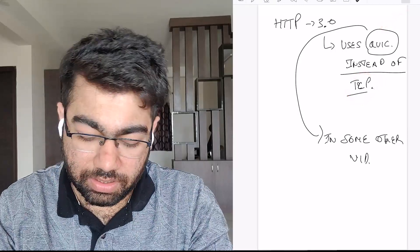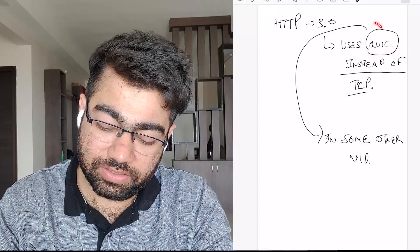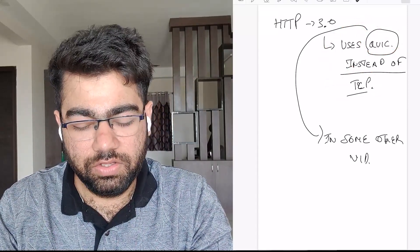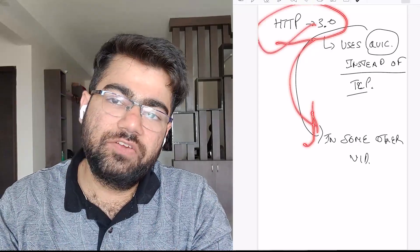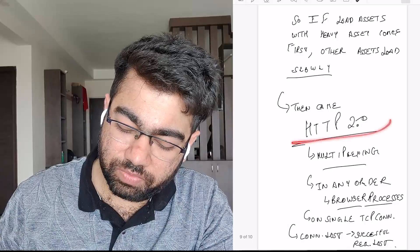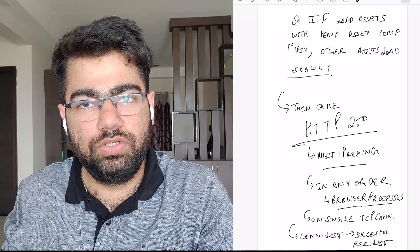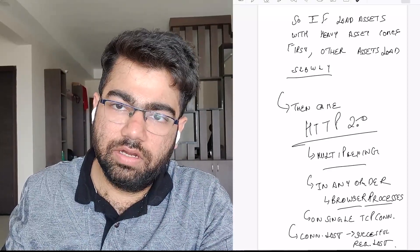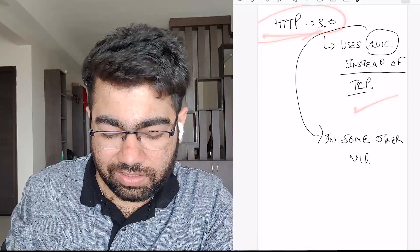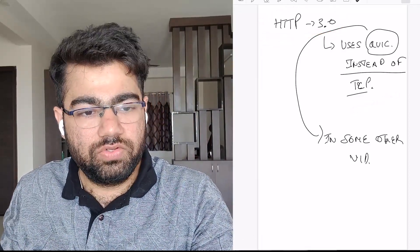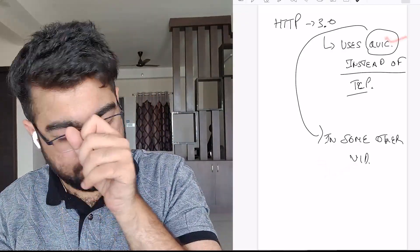After HTTP 2.0 came HTTP 3.0, which uses QUIC instead of TCP at Layer 4. We'll be discussing what QUIC is and why it's better than TCP in another video. Many websites today still function on HTTP 2.0 because the issues there are far less severe compared to 1.0 and 1.1. But HTTP 3.0 corrects those remaining issues, though HTTP 3.0 also has some of its own issues that we'll discuss later.